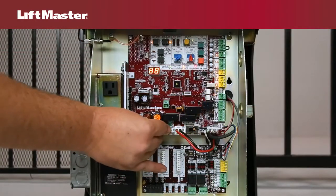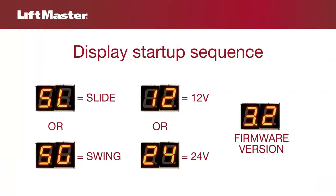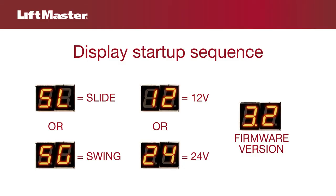When you turn on the operator, the diagnostic code display will show SL or SW for a slide or swing operator, 12 or 24 for a 12-volt or 24-volt operator, and the firmware version.